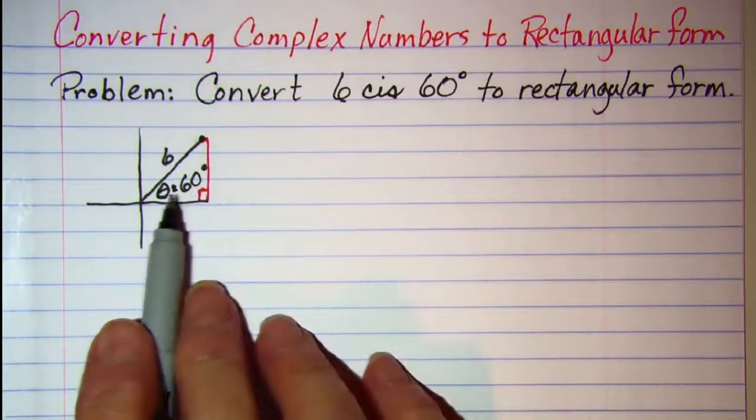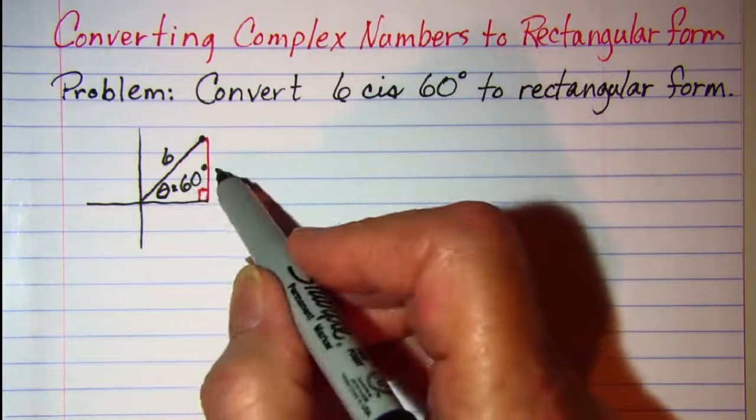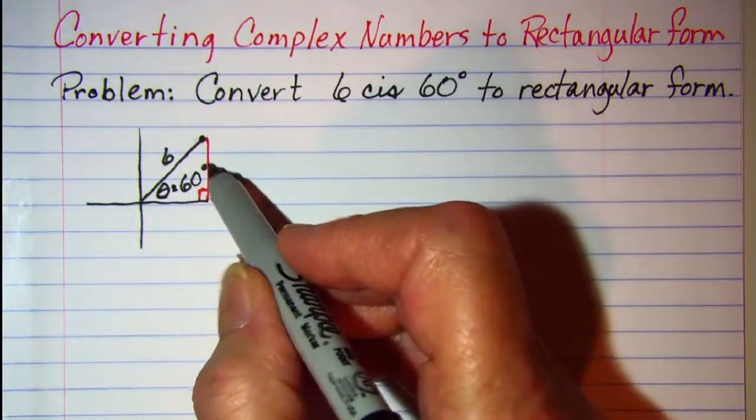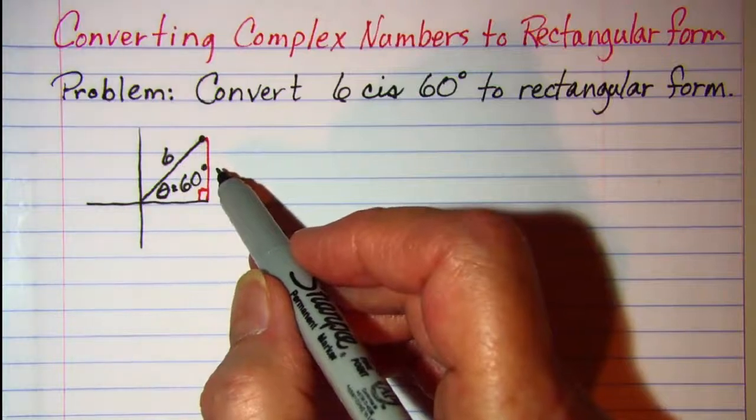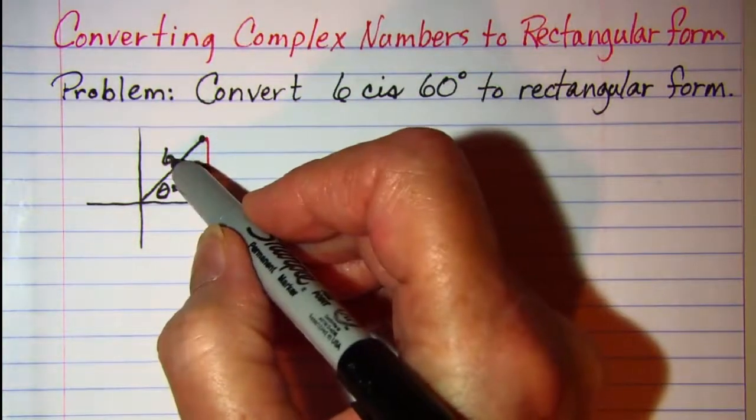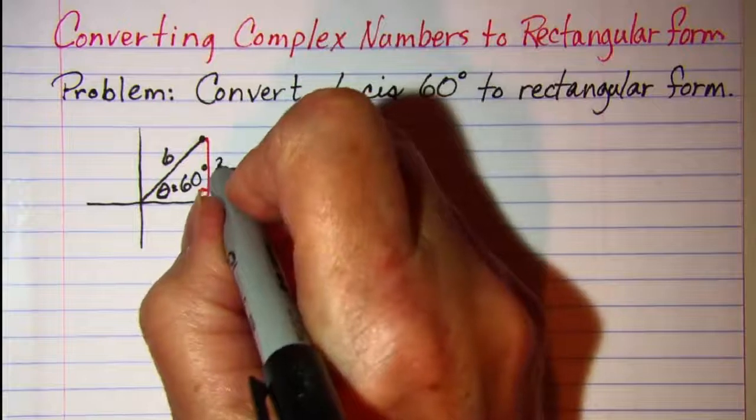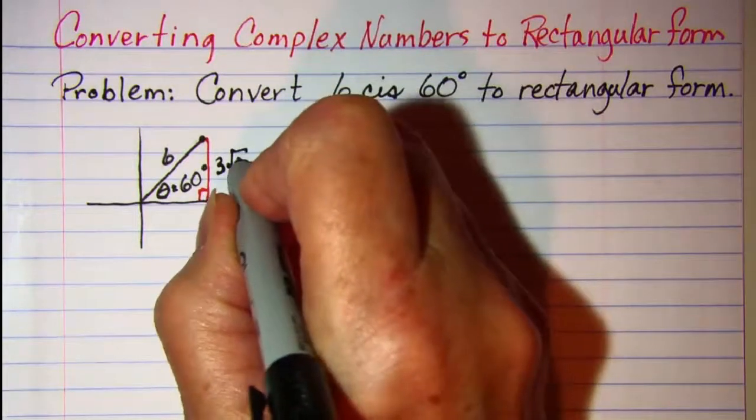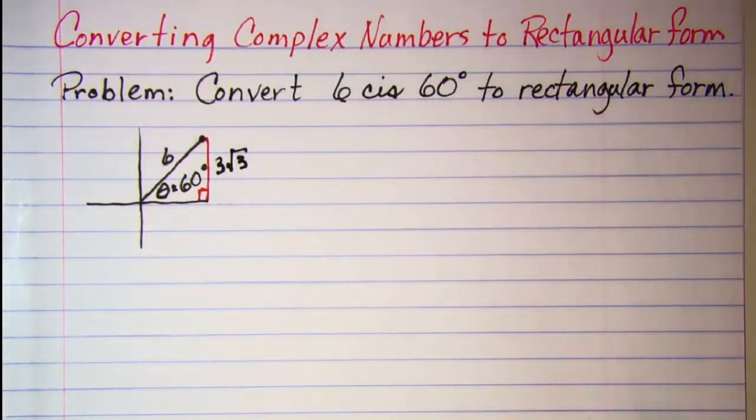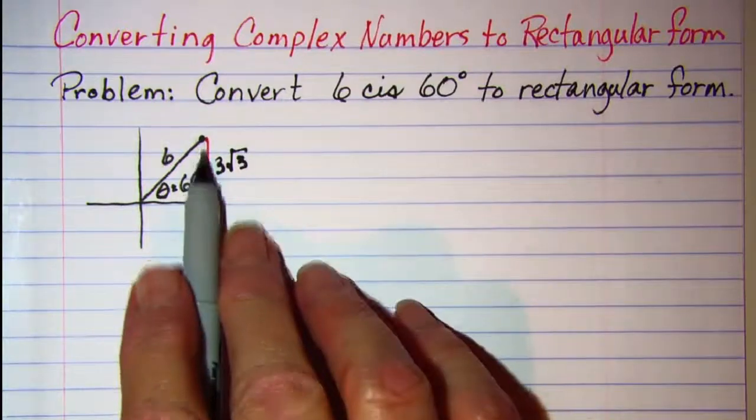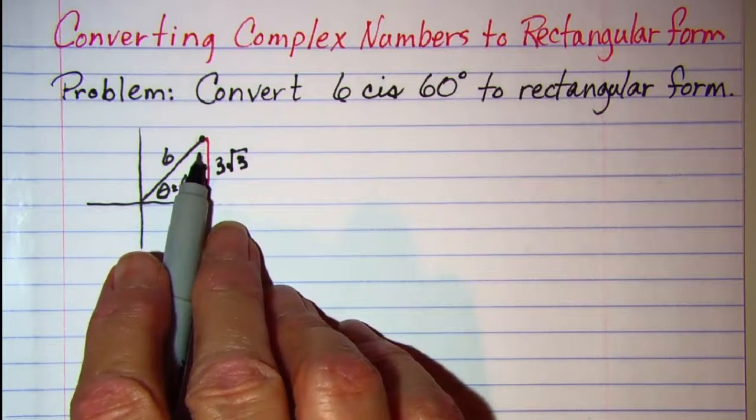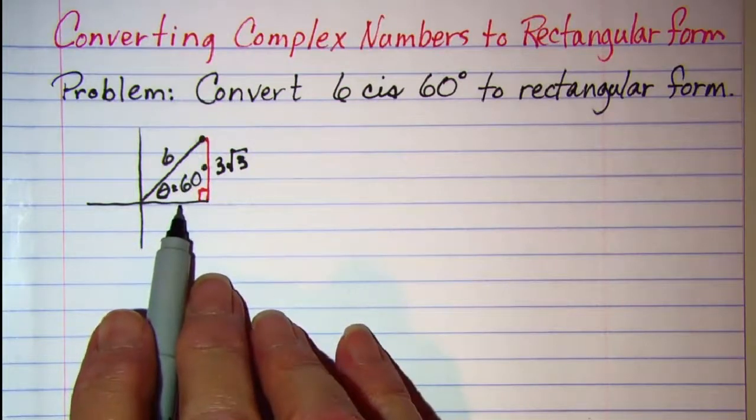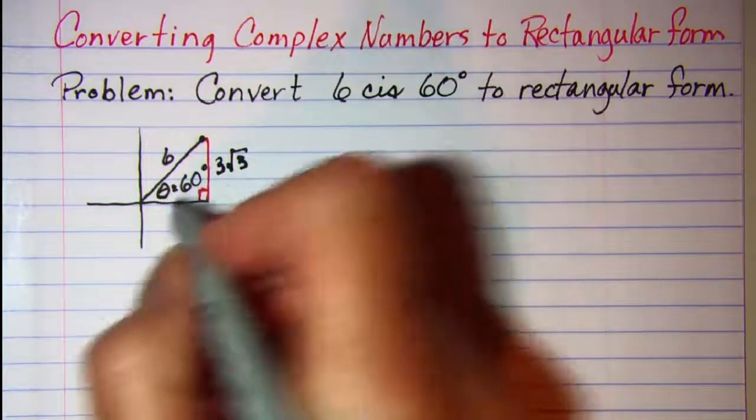From our special triangles we know that the side opposite to 60 is half the hypotenuse times the square root of 3. So half the hypotenuse is 3 and then times the square root of 3 would be our vertical component. And then the angle here is 30, so the side opposite to 30 is half the hypotenuse and that's just 3.